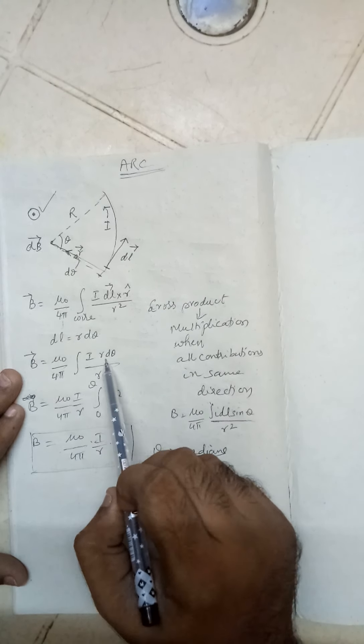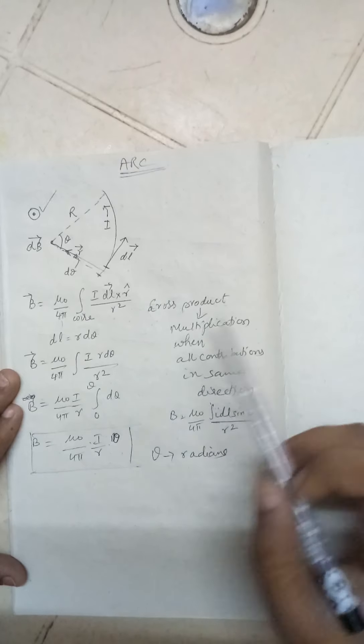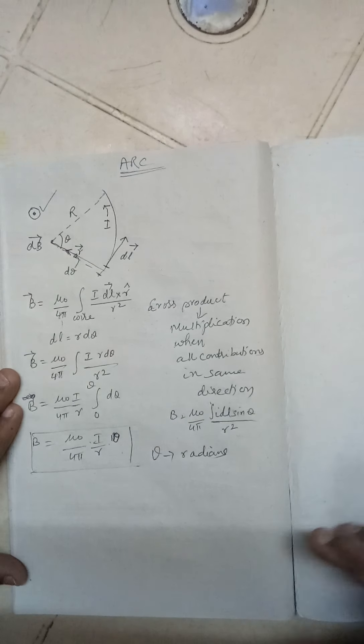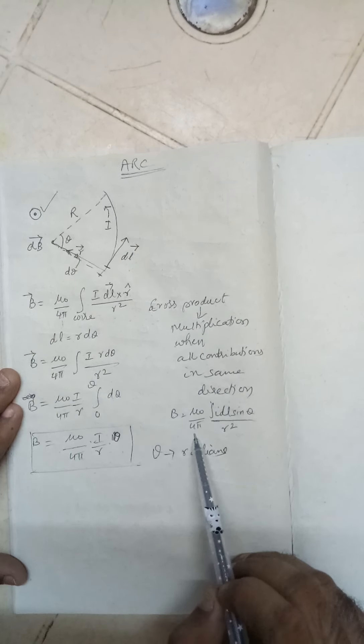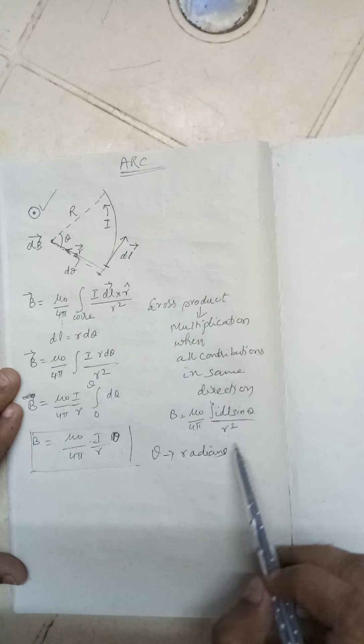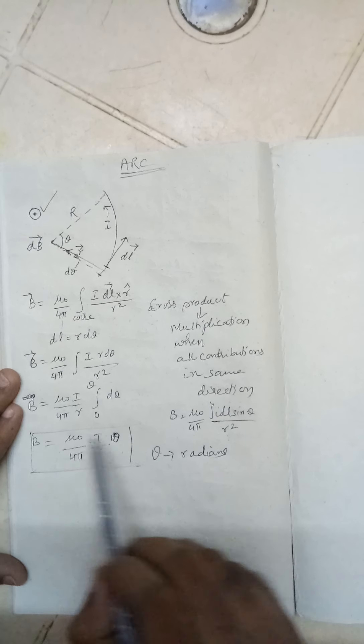So I can take the direct magnitude form. What is the magnitude form? You know that B is equal to mu_0 by 4 pi, integration of i d theta by r square. But sin theta will be 1 because the angle between dl and r is 90, so sin 90 is 1. So magnitude of B will be B is equal to mu_0, take out i here, r r get cancelled.